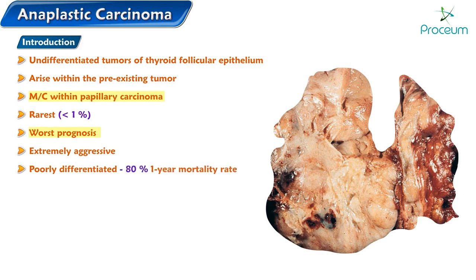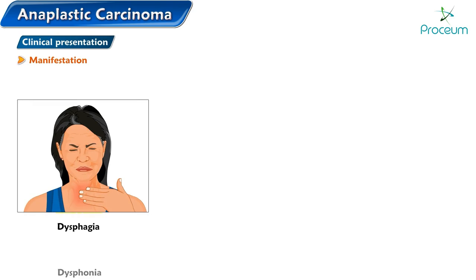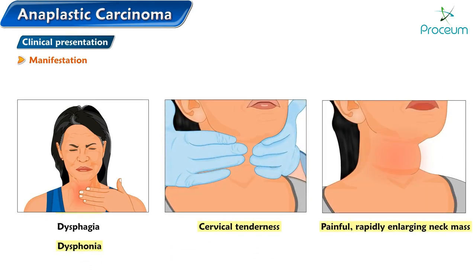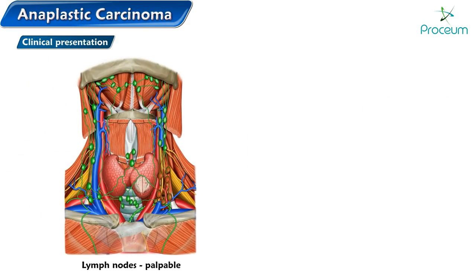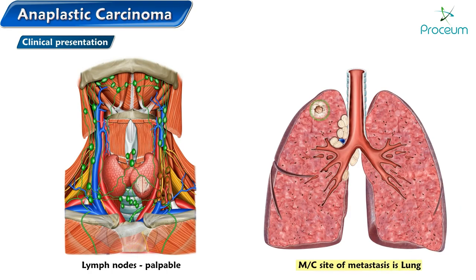Anaplastic carcinoma mainly affects women in the seventh and eighth decade. Typical manifestations include dysphagia, dysphonia, cervical tenderness, and a painful rapidly enlarging neck mass. Superior vena cava syndrome can also be part of the findings. Lymph nodes are usually palpable at presentation, and the most common site of metastasis is the lung.